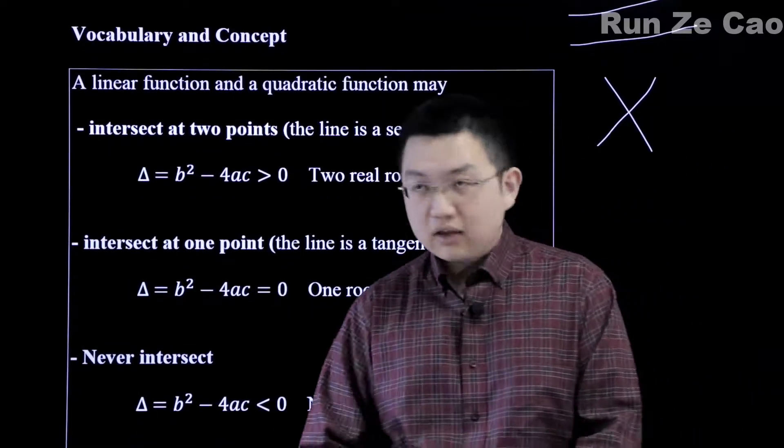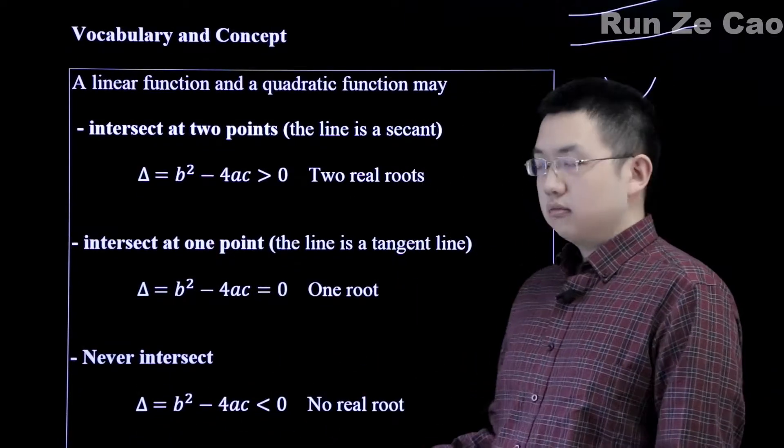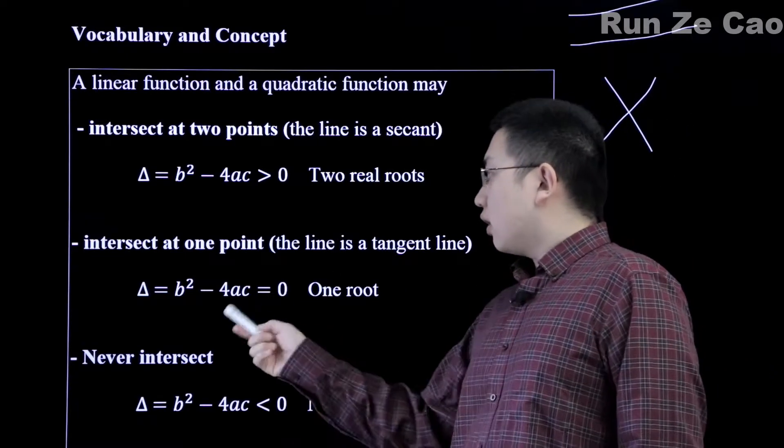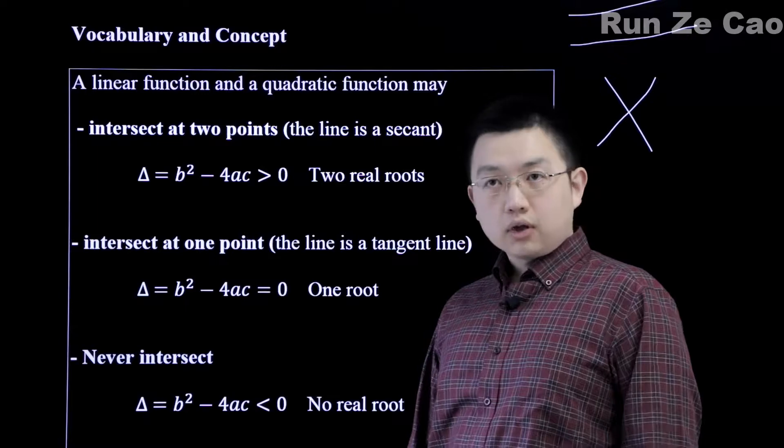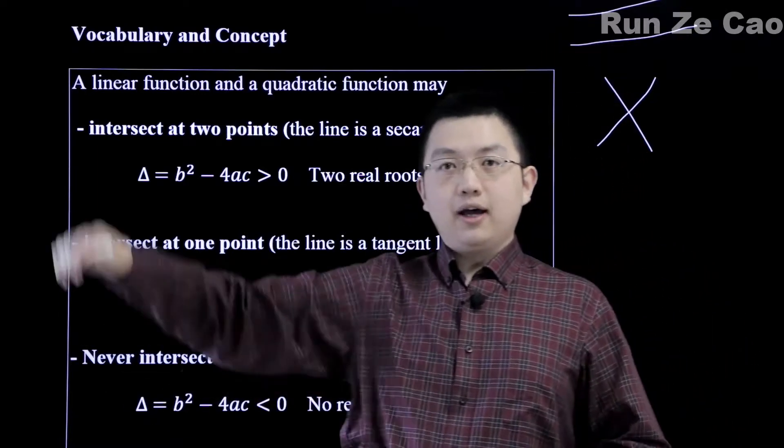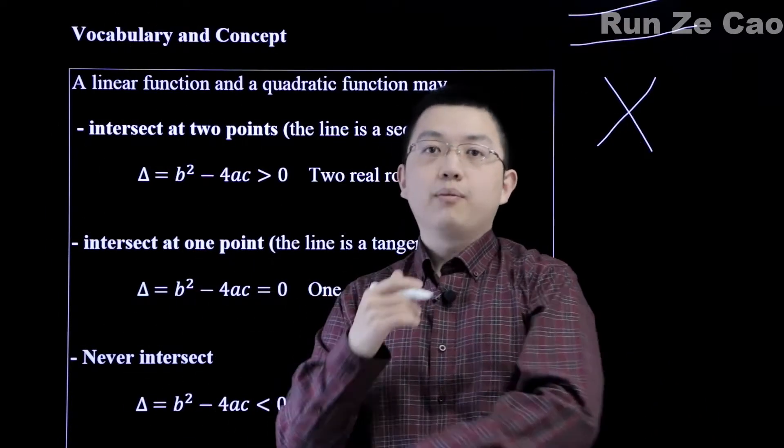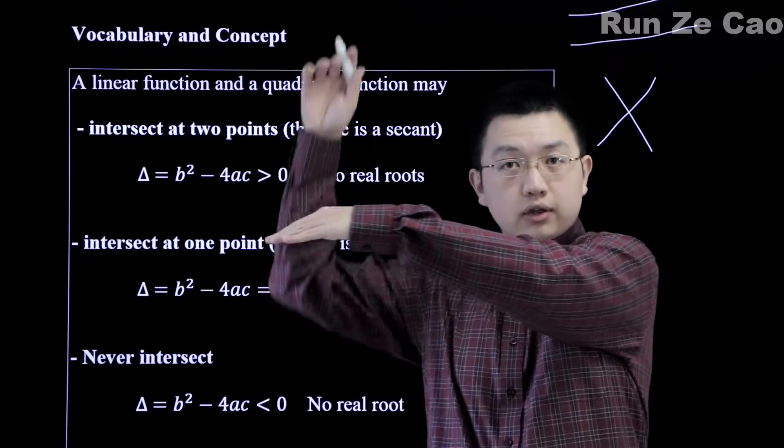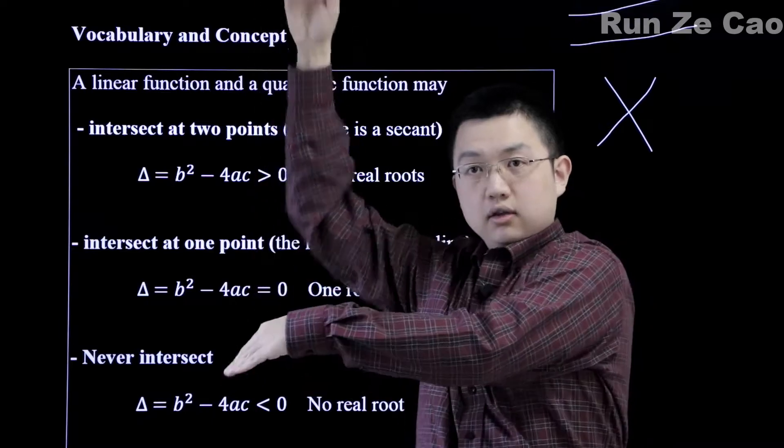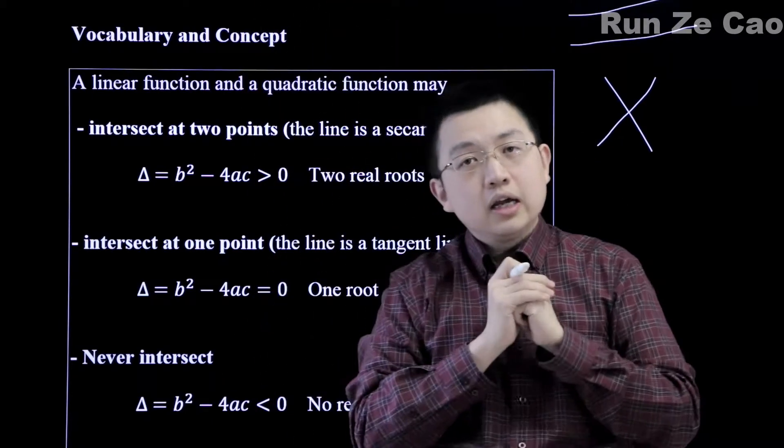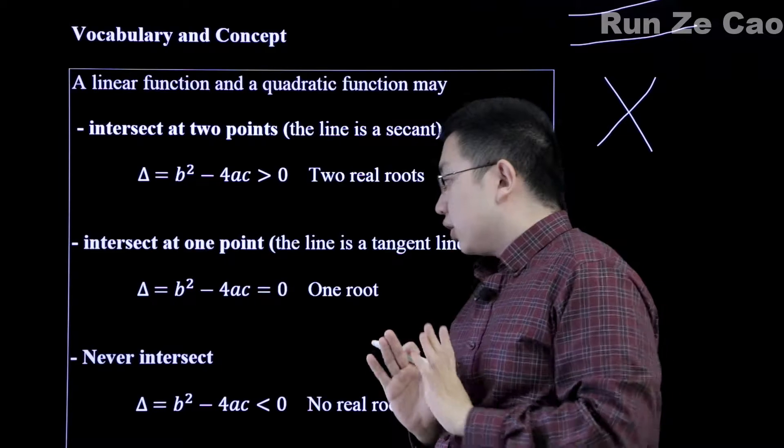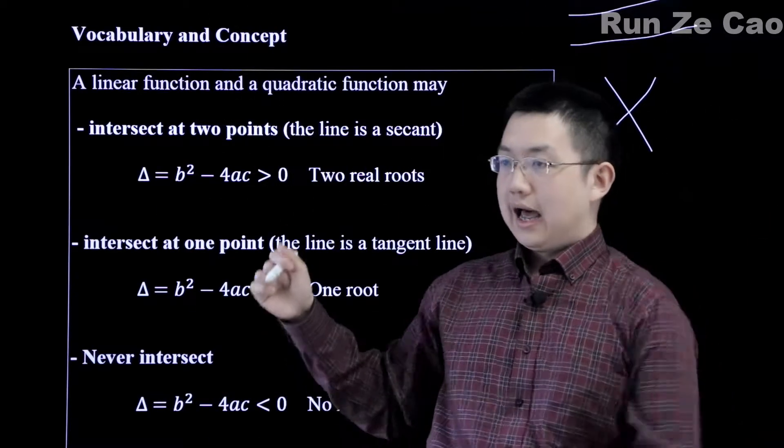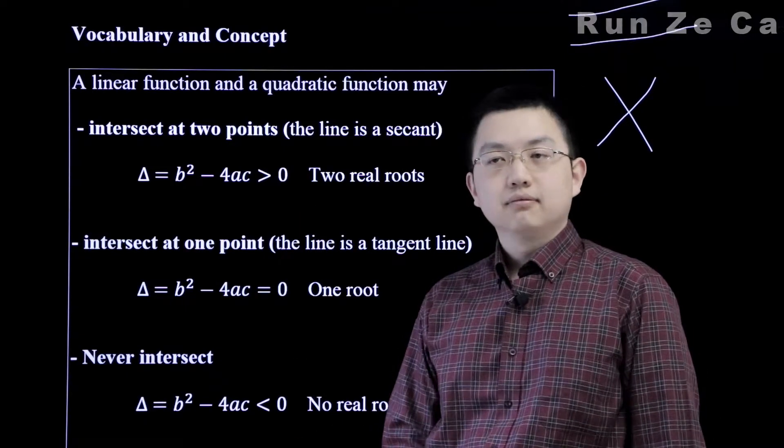One, we intersect at two points. Now you might be thinking why are we using this - that will be explained momentarily. The other option is that they intersect at one point, so say we have a parabola and we have a line that just touches it at one point. This is very different from a line that touches it at two points. Or we could never intersect, so parabola and line never intersects.